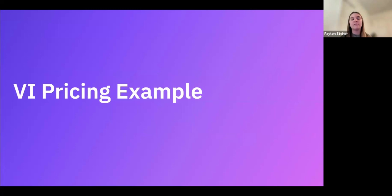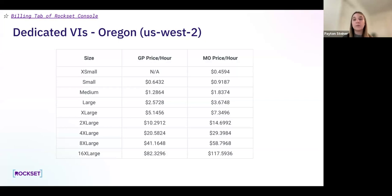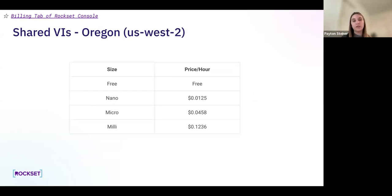I want to briefly touch on virtual instance pricing examples so you can see the differences between options. Here you can see a snapshot of the different dedicated virtual instance prices for the US West region. Prices vary by region. For a source of truth on pricing, check our pricing calculator, which I'll demo later, or navigate to the billing tab of the Rockset console, which has a price breakdown specific to your organization. Compute is charged per hour that your virtual instance is running.